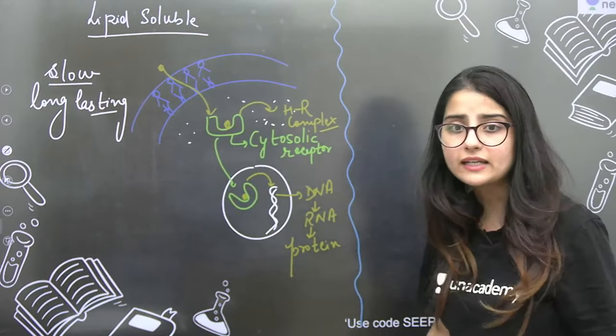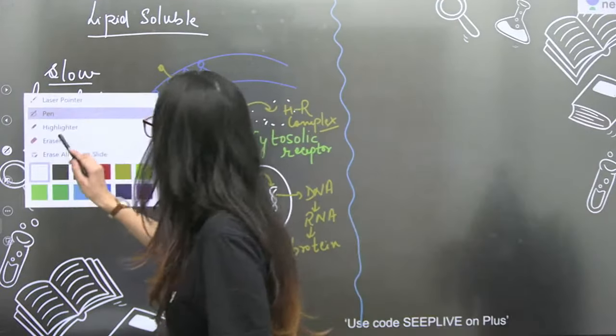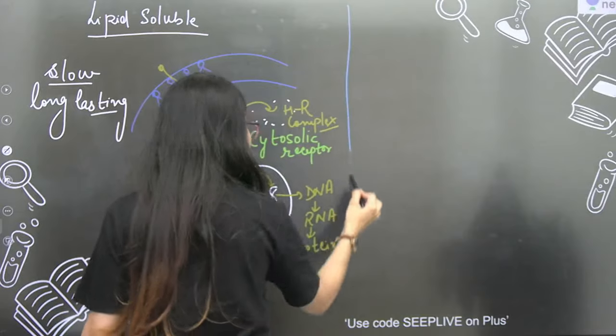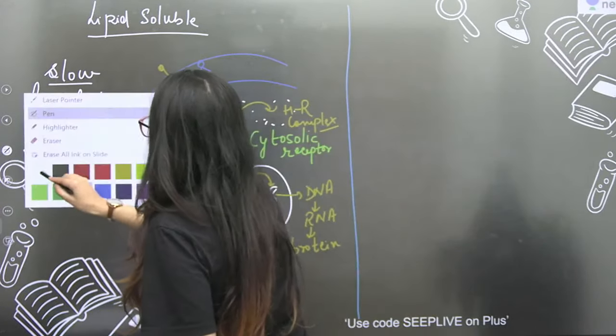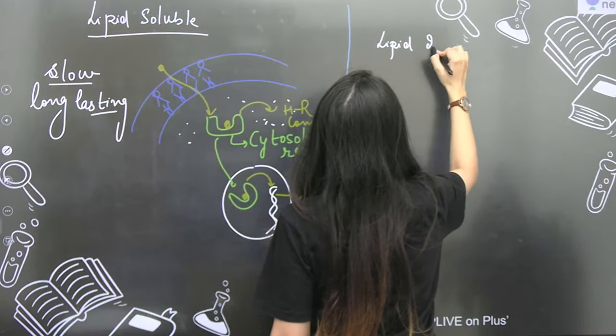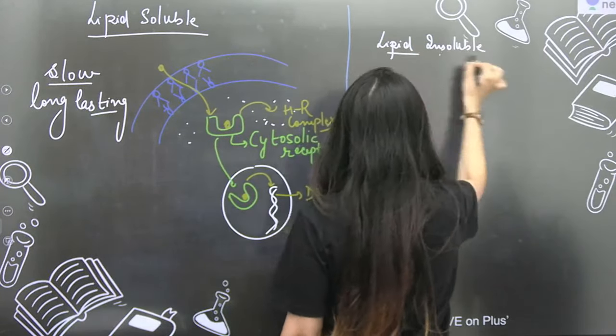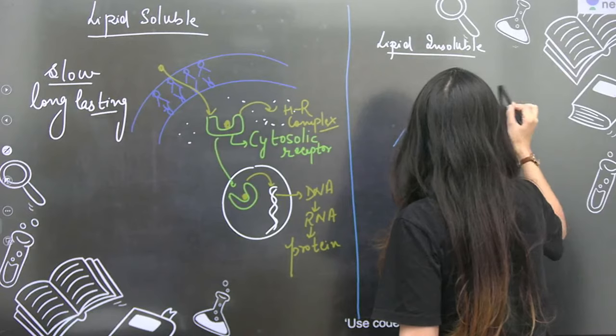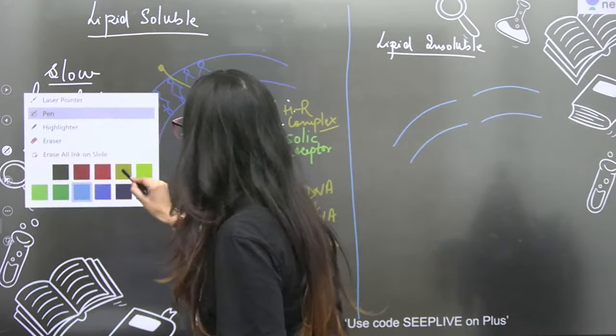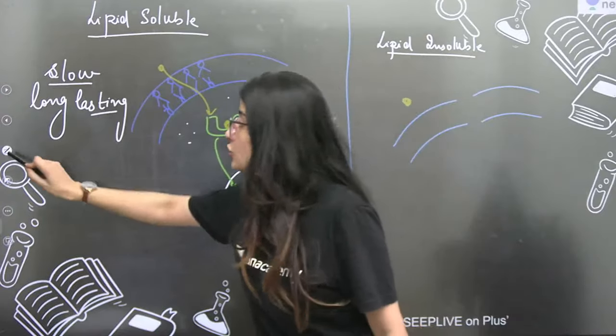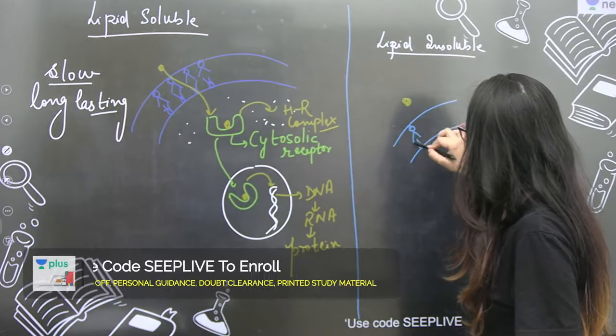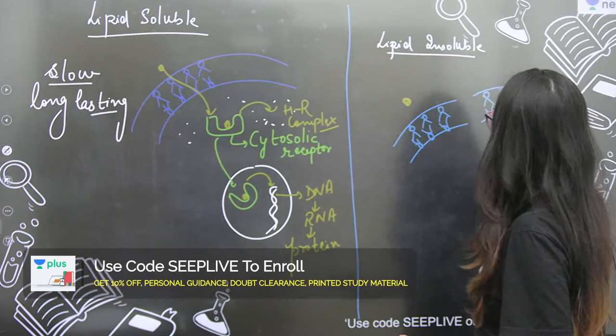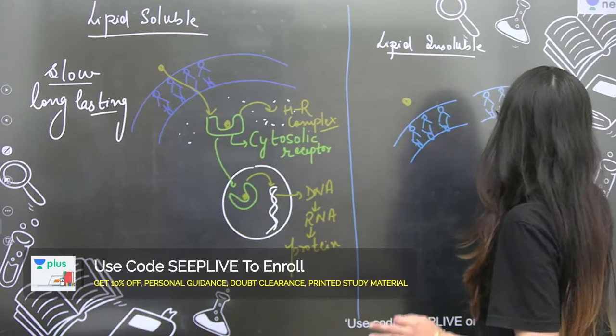Now let's go to the second category - lipid insoluble hormones. Lipid insoluble target cell has phospholipid membrane present. This is phospholipid bilayer. This hormone is lipid insoluble, so it will not cross the lipid bilayer. It will not cross into the inner components because it is lipid insoluble. So when the lipid insoluble hormone comes, the lipid bilayer will not allow this hormone to enter into the cell.